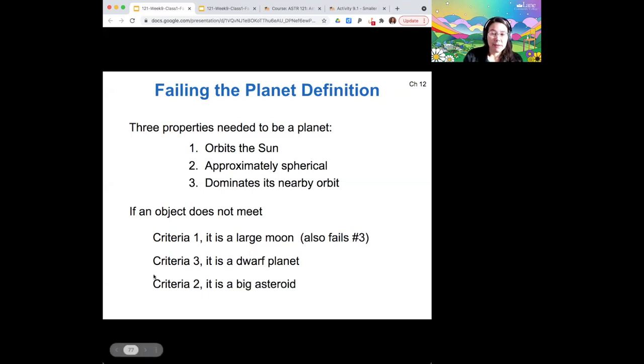And then if it fails criteria number two, it's not really spherical enough, then it's probably a large asteroid or a Kuiper Belt object. In that case, it would probably also fail number three because neither asteroids nor Kuiper Belt objects dominate in either of those locations. Pluto also doesn't really dominate its orbit because it's in the Kuiper Belt, which is full of other stuff.